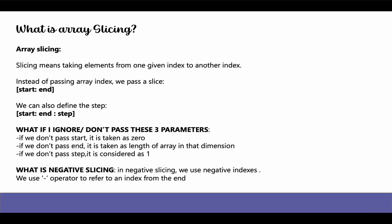Now the question arises: what if we don't pass these three parameters? If we don't pass start, it is taken as zero. If we don't pass end, it is taken as the length of the array in that dimension. If we don't pass step, it is taken as one by default. We can also slice the array using negative indexes. So this is a brief introduction to array slicing — now let's move on to the coding part.